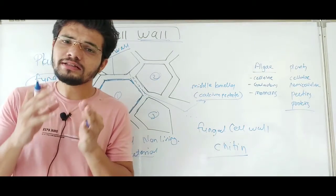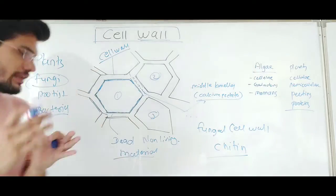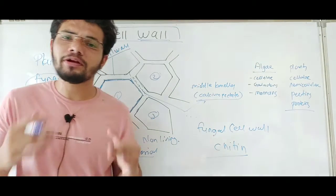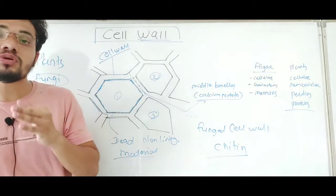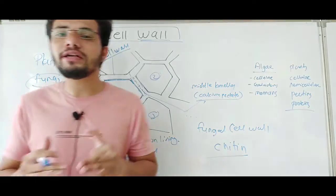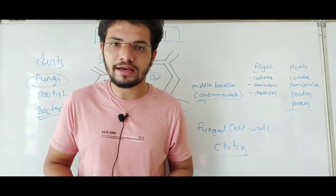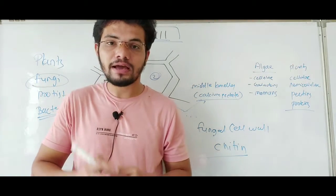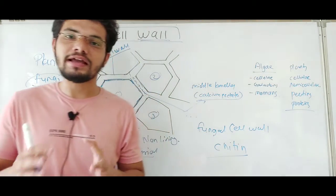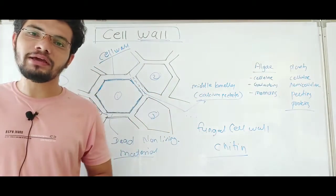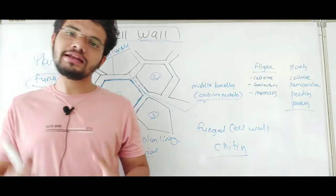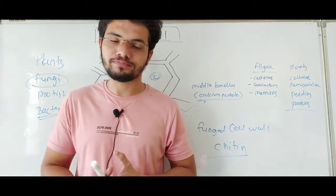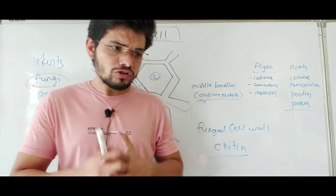The bacterial cell wall is made up of peptidoglycan. Peptidoglycan is also a type of polysaccharide made up of NAM (N-acetyl muramic acid) and NAG (N-acetyl glucosamine).